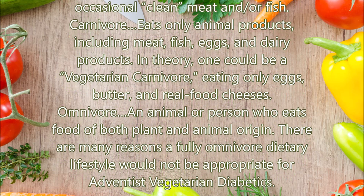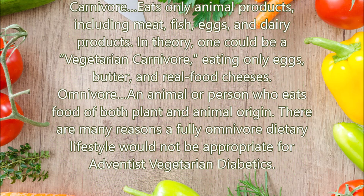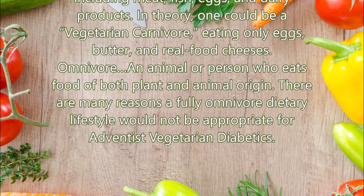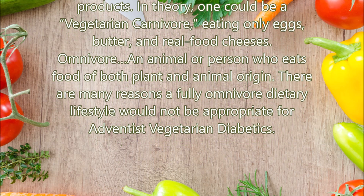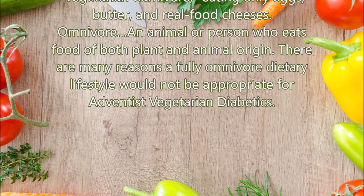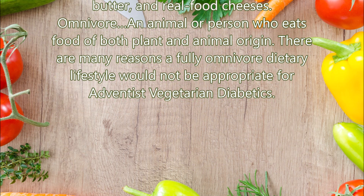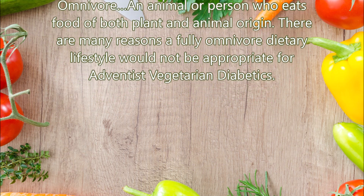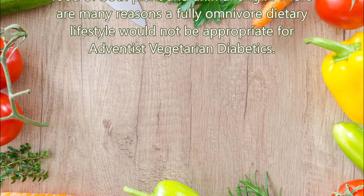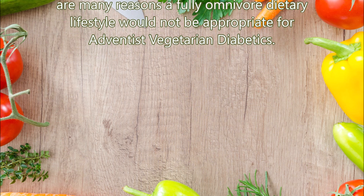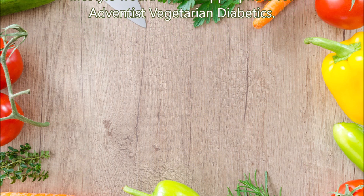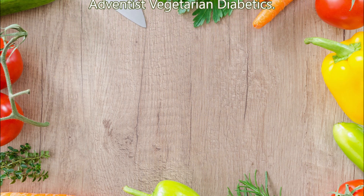In theory, one could be a vegetarian carnivore, eating only eggs, butter, and real food cheeses. Omnivore — an animal or person who eats food of both plant and animal origin. There are many reasons a fully omnivore dietary lifestyle would not be appropriate for Adventist vegetarian diabetics.